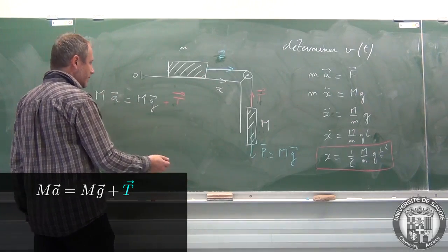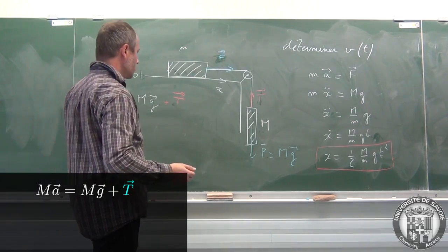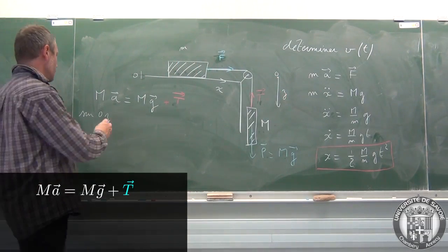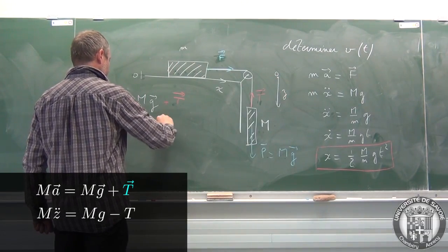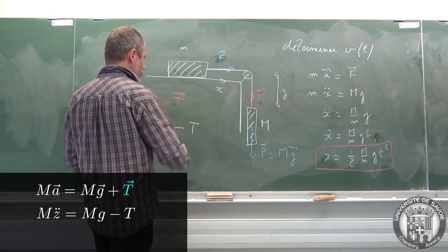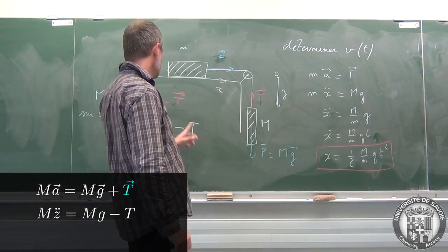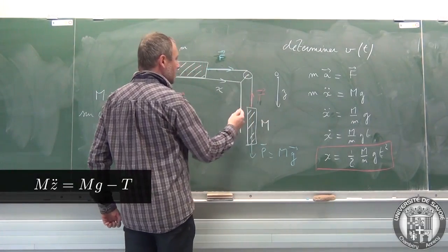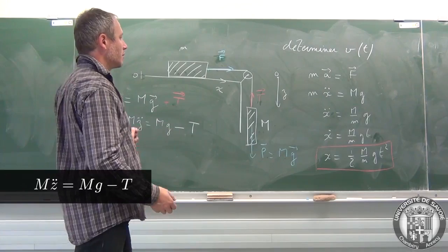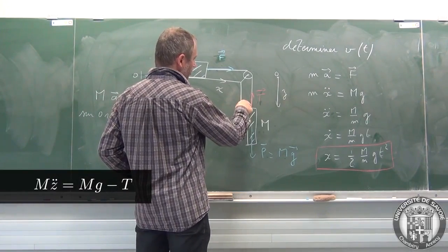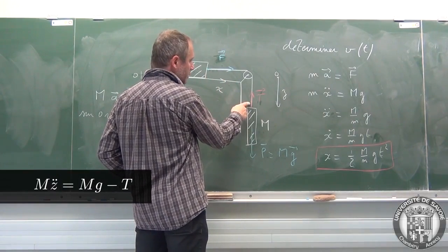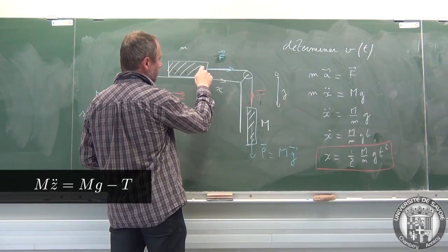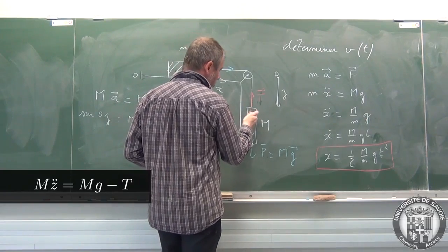En l'absence de frottement avec l'air, voilà ici les deux forces auxquelles serait soumis le système. Et on voit que la tension du fil qui est ici, en norme, n'est pas égale à Mg. La tension du fil n'est pas égale au poids. C'est précisément la différence qui fait que le corps est en train de tomber. Si j'oriente Z vers le bas, on se retrouve avec Mz̈ = Mg - T. Pourquoi est-ce que c'est intéressant? Parce que maintenant, quand on étudie le fil lui-même, on peut montrer que pour un fil dont la masse est négligeable et un fil qui n'est pas élastique, la force ici est égale en norme à la force T qui est ici.